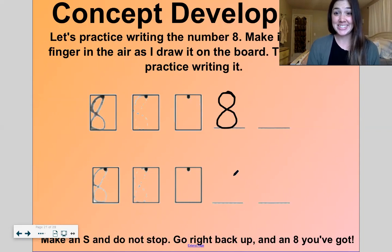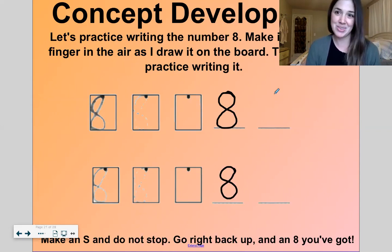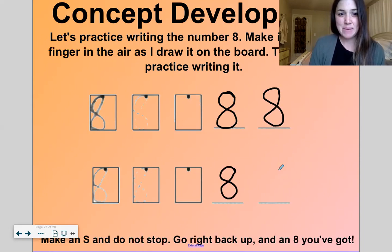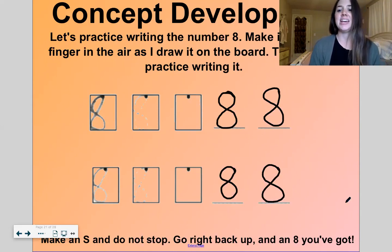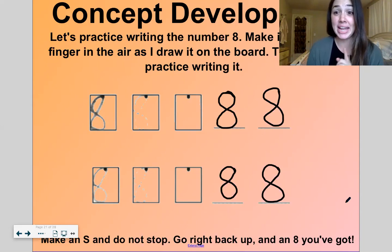That's an eight! Let's try again: make an S and do not wait, go back to the top — that's an eight. Let's do it two more times. Make an S and do not stop, go right back up, and an eight you've got! Make an S and do not stop, go right back up — and an eight you've got!